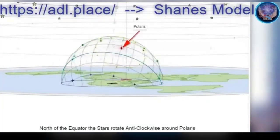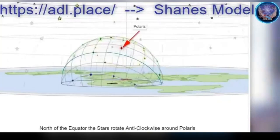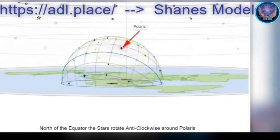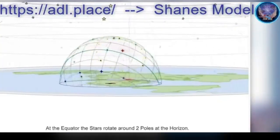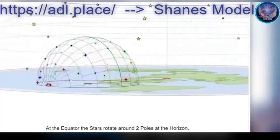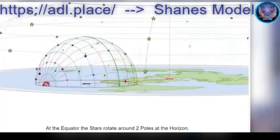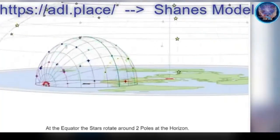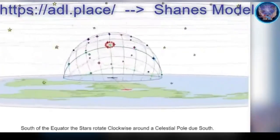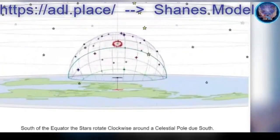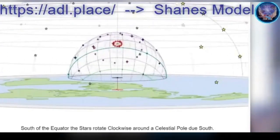But that very program that you're pointing out was created by an anti-Flat Earther. He set out to prove Flat Earth is wrong. And under his own admission, to his surprise, he was able to map out everything that happens in the sky way more accurately than he expected to be able to do that.